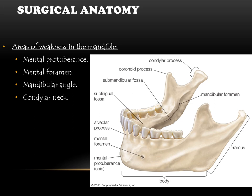There are certain areas of weakness in the mandible — areas that are more prone to fracture when they receive a blow or a force. These areas are the mental protuberance, the mental foramen, the mandibular angle, and the condylar neck. These constitute the areas of weakness along the mandible.